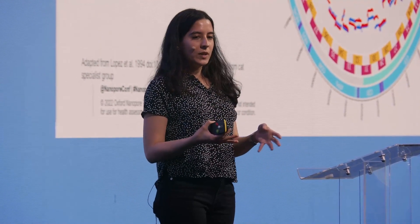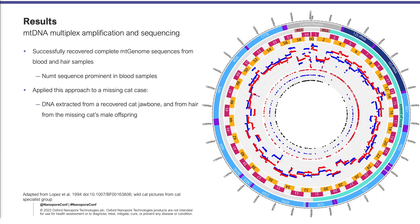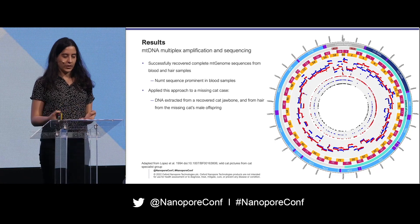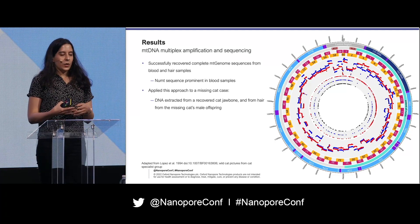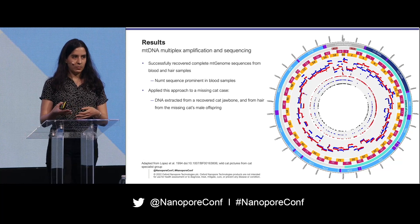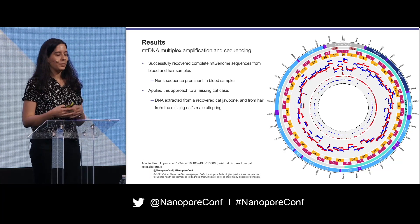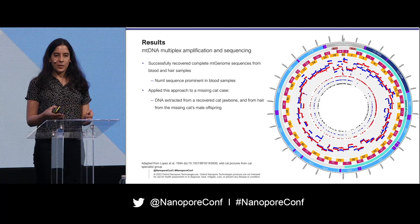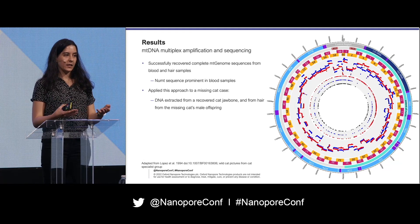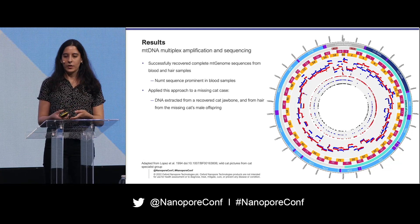Because we designed this multiplex approach for degraded samples, we were able to apply it to a missing cat case. A cat had gone missing and around the same time the owner found a cat jawbone, wanting to know whether it could have belonged to the missing cat. We extracted DNA from the jawbone and from hairs from the missing cat's male offspring, and obtained complete mitogenome sequences for both. In this case they matched, indicating that the jawbone was likely that of their missing cat.